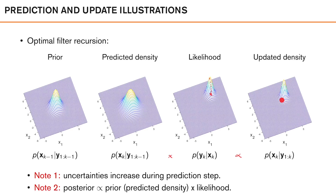To summarize: we start with our initial prior, which is the posterior from the previous time instance. We do a prediction step to calculate the predicted density describing the state at the current time using all past observations — during this step our uncertainty increases as the data is getting older. Then by performing the measurement update, multiplying the predicted density by our likelihood using the observation at time k, we incorporate the new information to compute a posterior density that is more certain about where the object is. In future lectures we will look at the mathematics for calculating these densities for different types of state space models, and also how we can find approximate solutions when we cannot solve the prediction and update equations analytically.